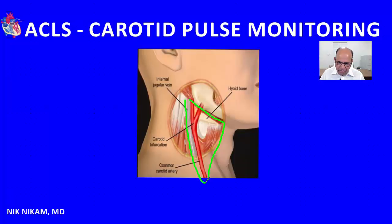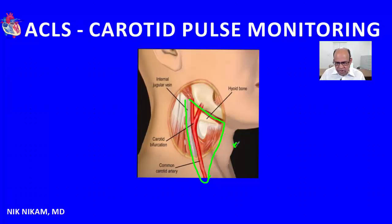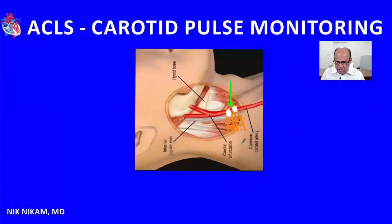This is called the anterior triangle, and the carotid artery is located in the anterior triangle. Another landmark we are going to talk about is the cricoid cartilage, which will help us identify the level at which we want to feel for the carotid pulse.